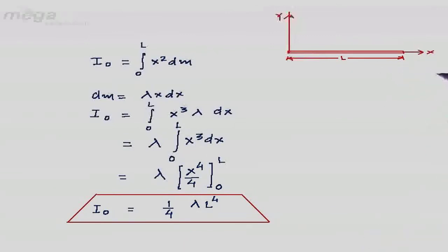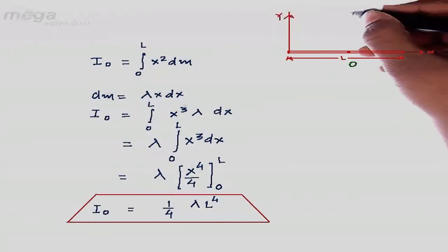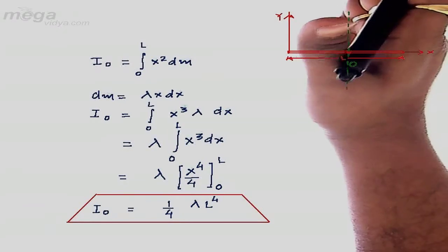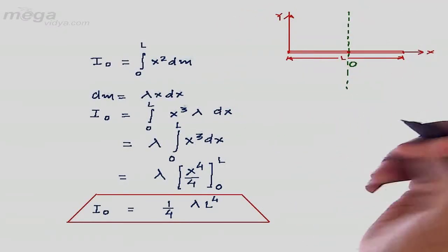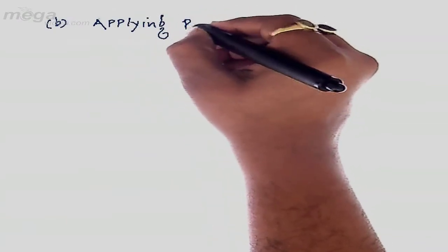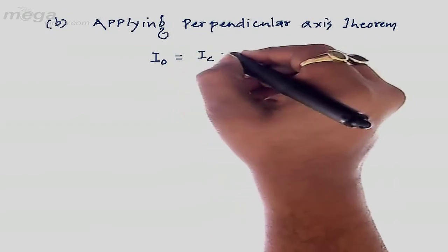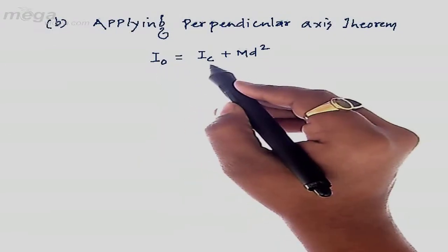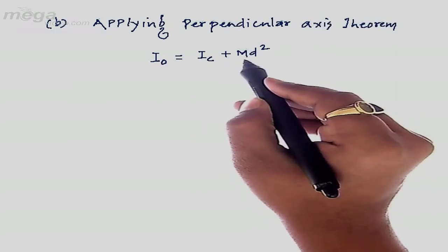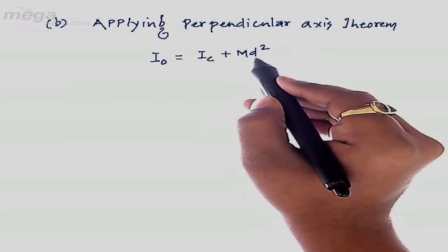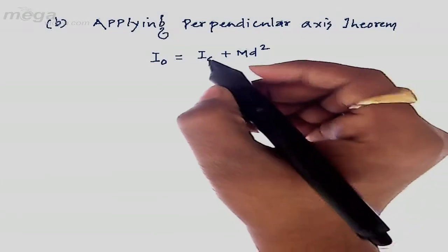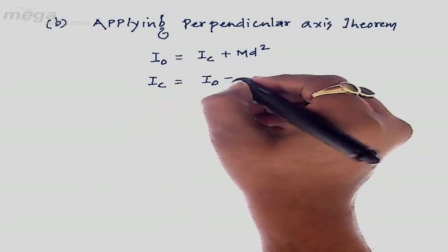For part B, the center lies at point O and we need to calculate the moment of inertia along the centroidal axis. From the figure, the centroidal axis is parallel to the y-axis. Applying the parallel axis theorem: I₀ = Ic + md², where I₀ is the moment of inertia along the y-axis, Ic is the moment of inertia along the centroidal axis, m is the total mass, and d is the distance between the two axes. Therefore, Ic = I₀ − md².